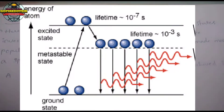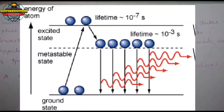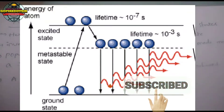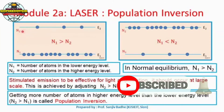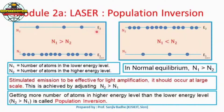A system in which population inversion is achieved is called an active system. Here, u1 represents the ground state energy level and u2 represents the excited state. N1 represents the number of atoms in the ground state, and N2 represents the number of atoms in the excited state. In normal conditions, the number of atoms in the ground state is higher.